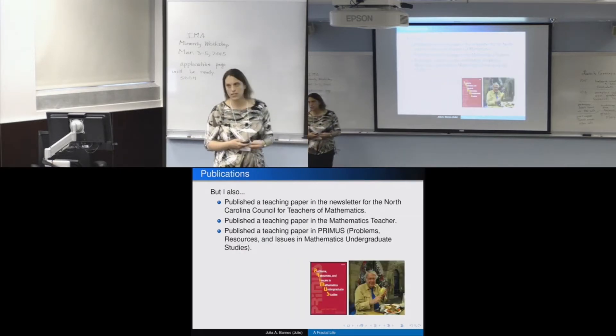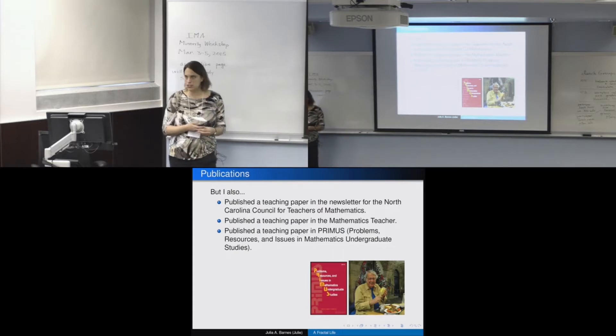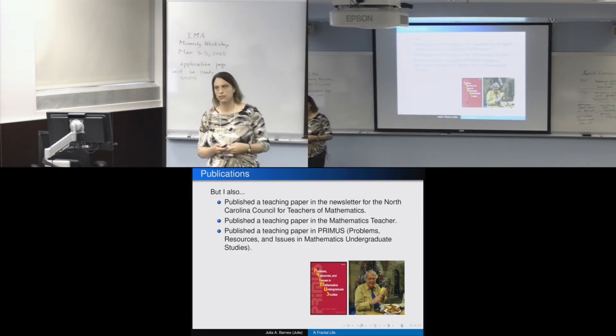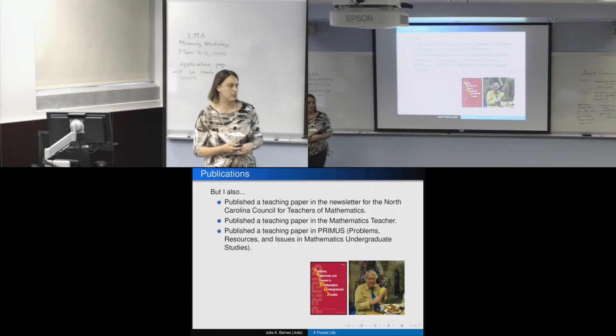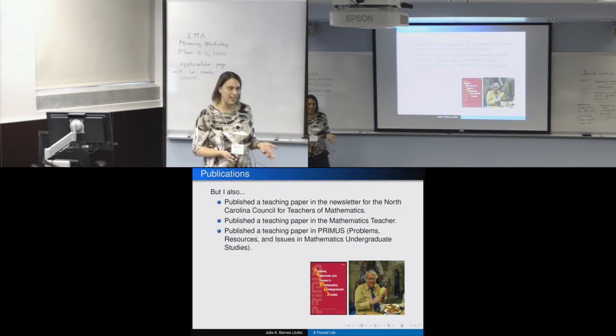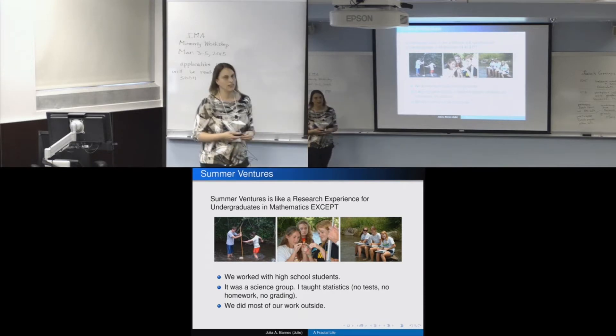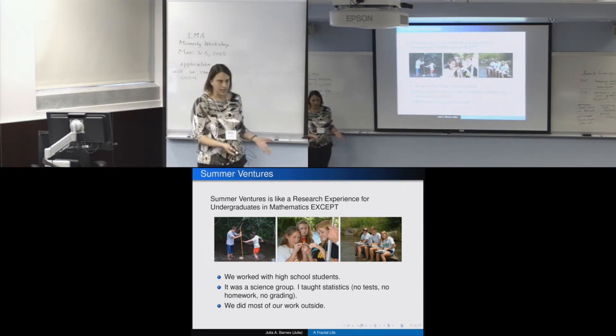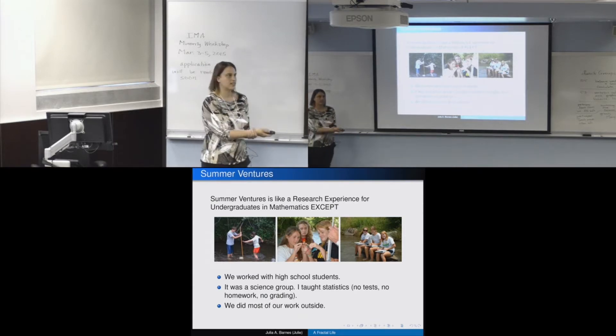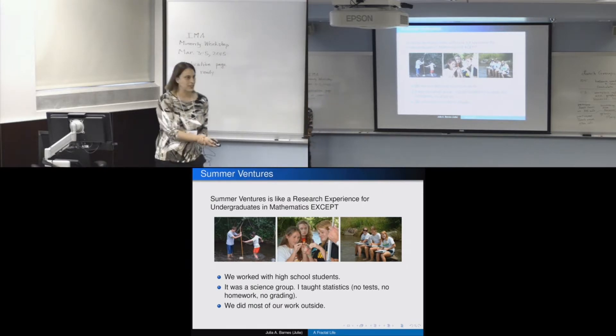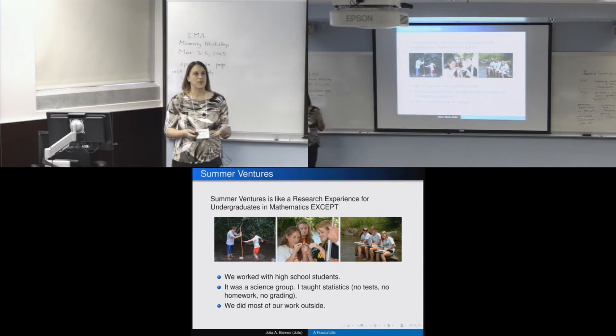And I also published in Primus, which stands for Problems, Resources, and Issues in Mathematics Undergraduate Studies. That's a picture of Brian Winkle. He was the originator of Primus and he was the editor for 30 years. He's retired recently and stepped down from it. But real person. All of these journals have real people editing them and you can actually ask them questions. And he was very helpful as an editor back then. I also did some programs in the summer that sort of a lot of what I did was an opportunity arose and I took it. So I was asked to help with the Earth Science Stream Hydrology Group for Summer Ventures.